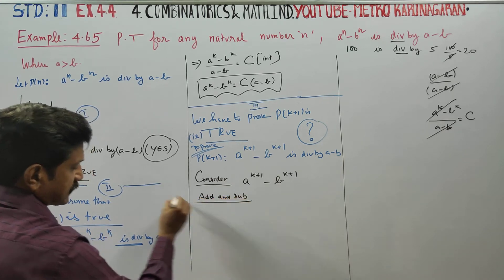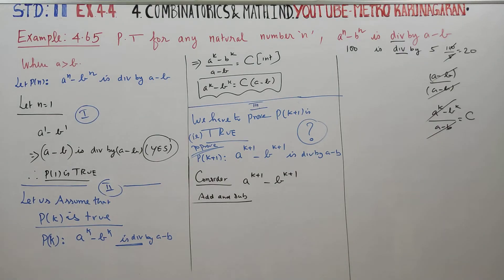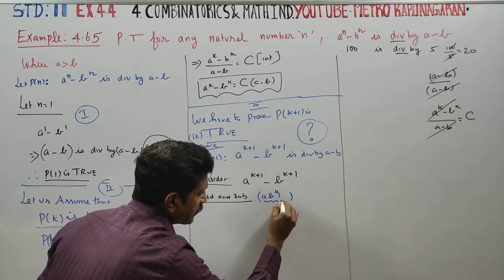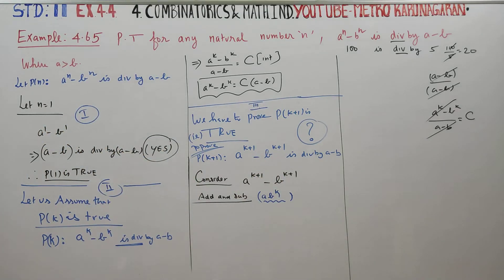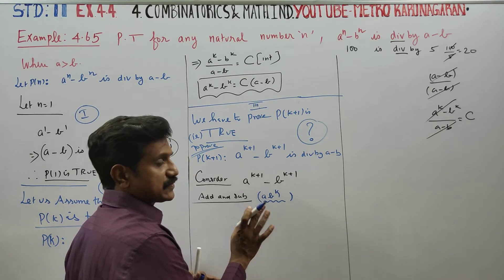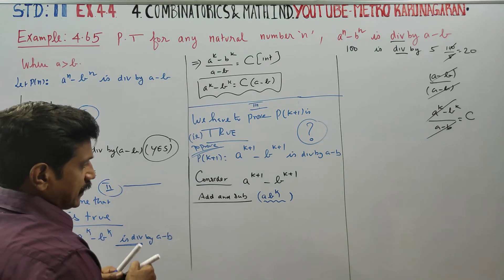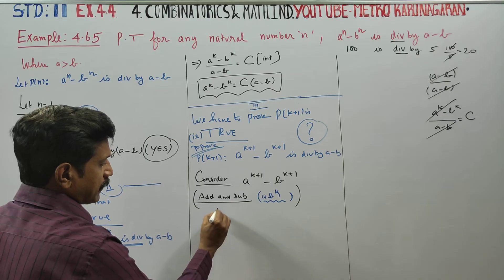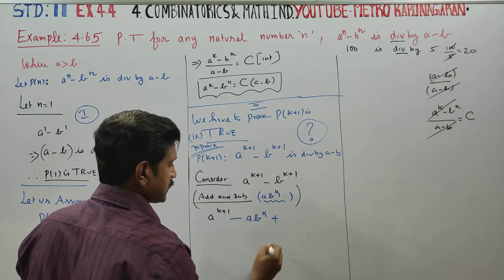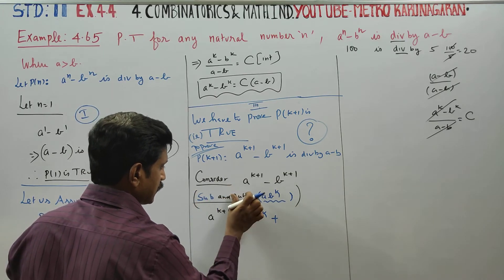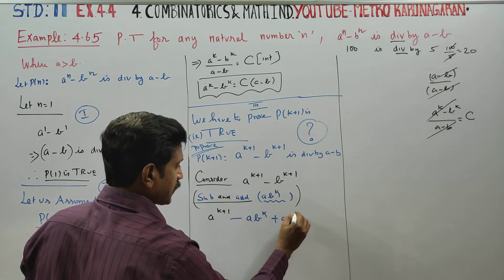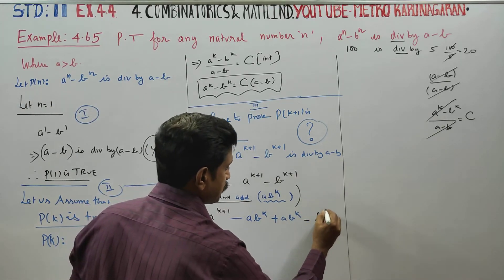To prove this, we use the add and subtract technique. We add and subtract ab power k. So: a power k+1 minus b power k+1, we add and subtract ab power k. Then subtract and add ab power k as needed. Minus b power k+1.